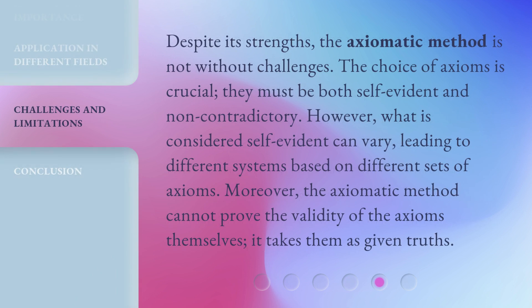Despite its strengths, the axiomatic method is not without challenges. The choice of axioms is crucial — they must be both self-evident and non-contradictory. However, what is considered self-evident can vary, leading to different systems based on different sets of axioms. Moreover, the axiomatic method cannot prove the validity of the axioms themselves; it takes them as given truths.